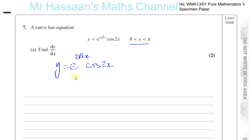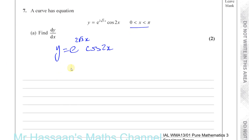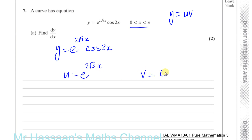This is a clear case of what's called the product rule. We have a product of two different functions which we have to differentiate. I'm going to use the product rule — the product rule starts with y equals u times v. I'll call the first one u: that's e to the power of 2 root 3 times x. And v I'm going to call cosine 2x.